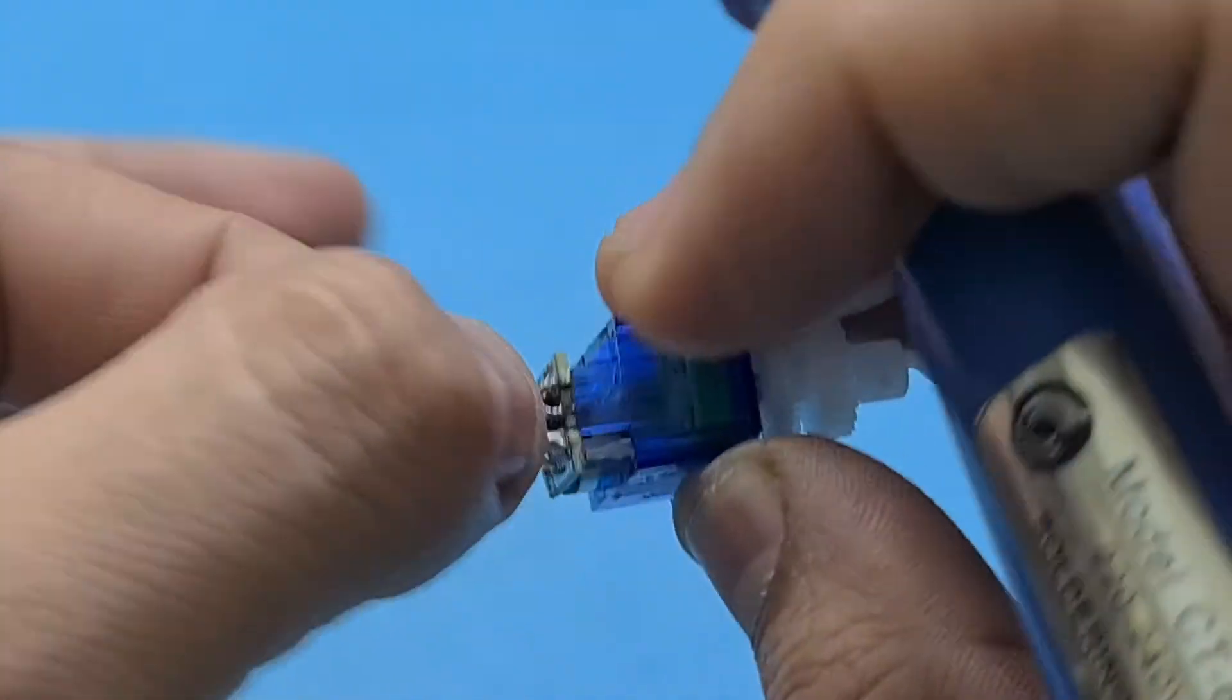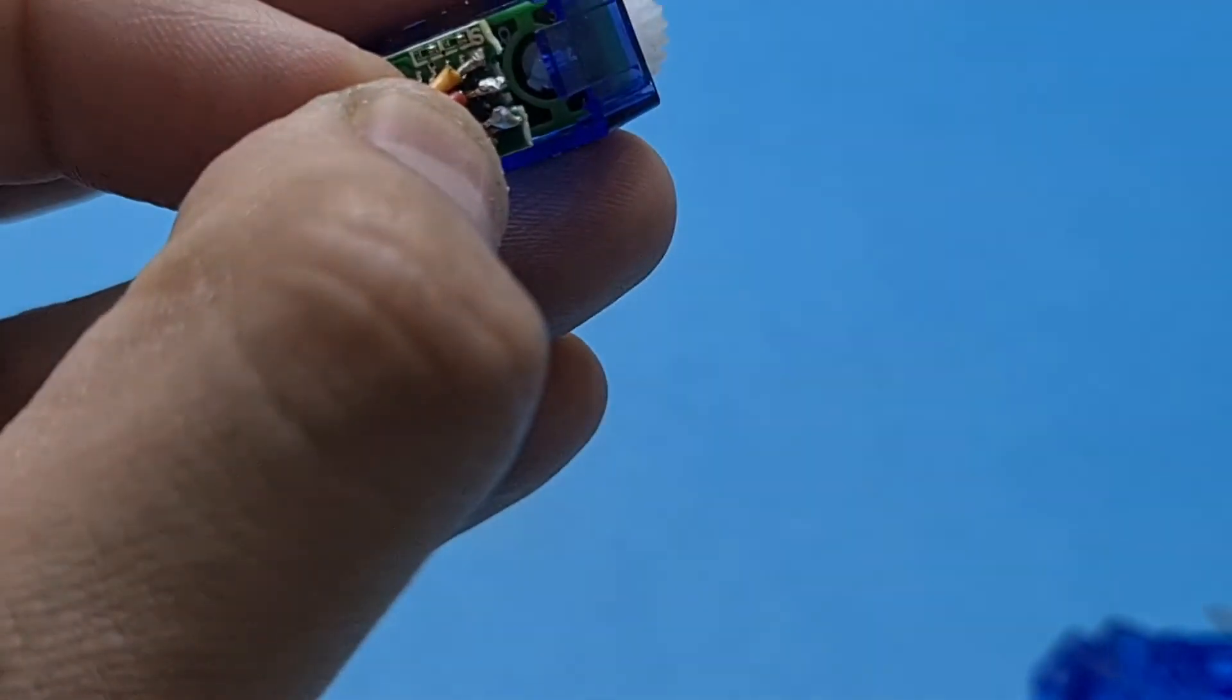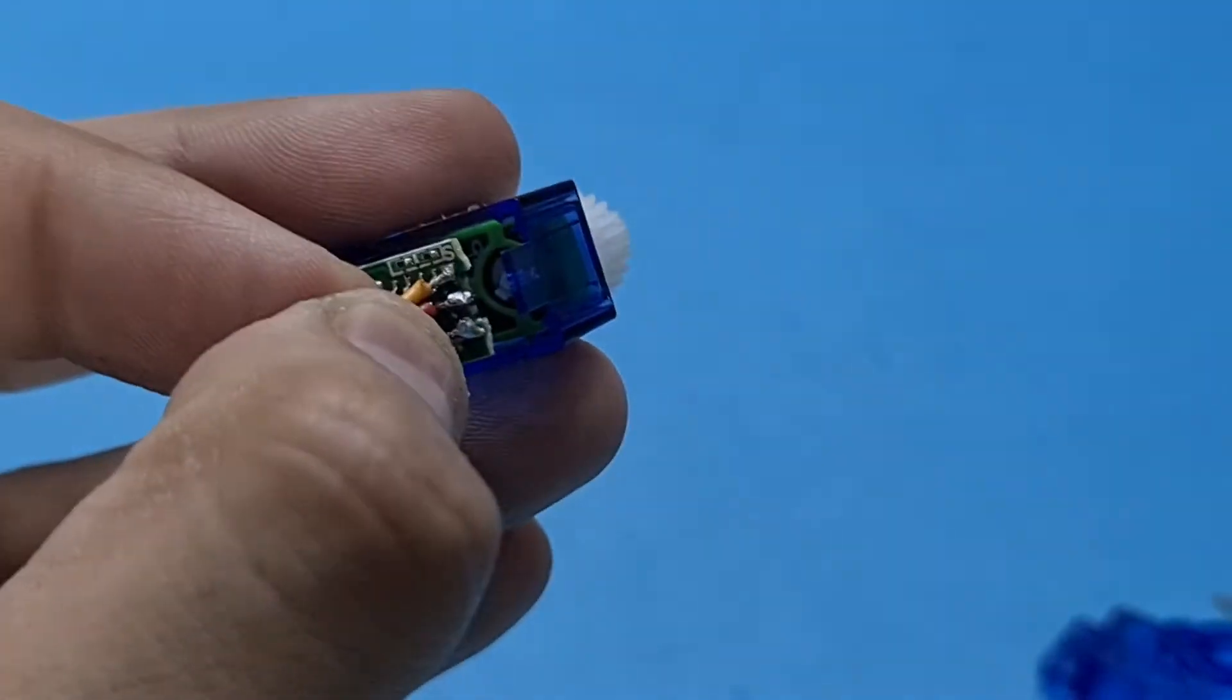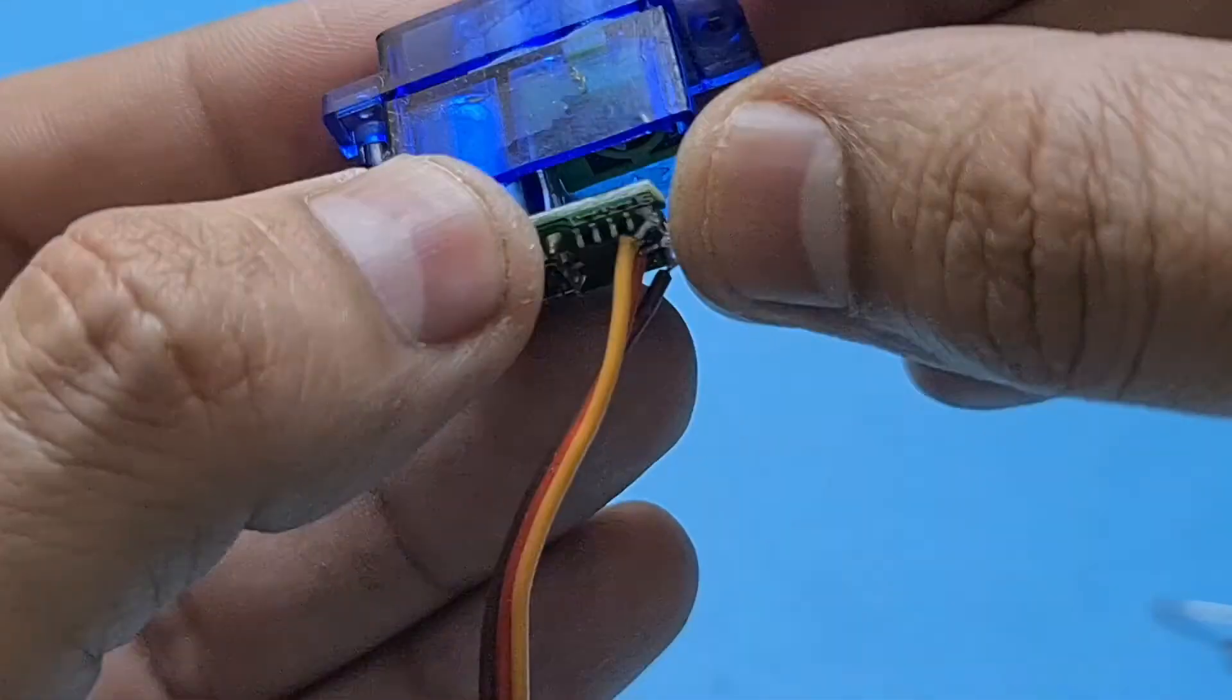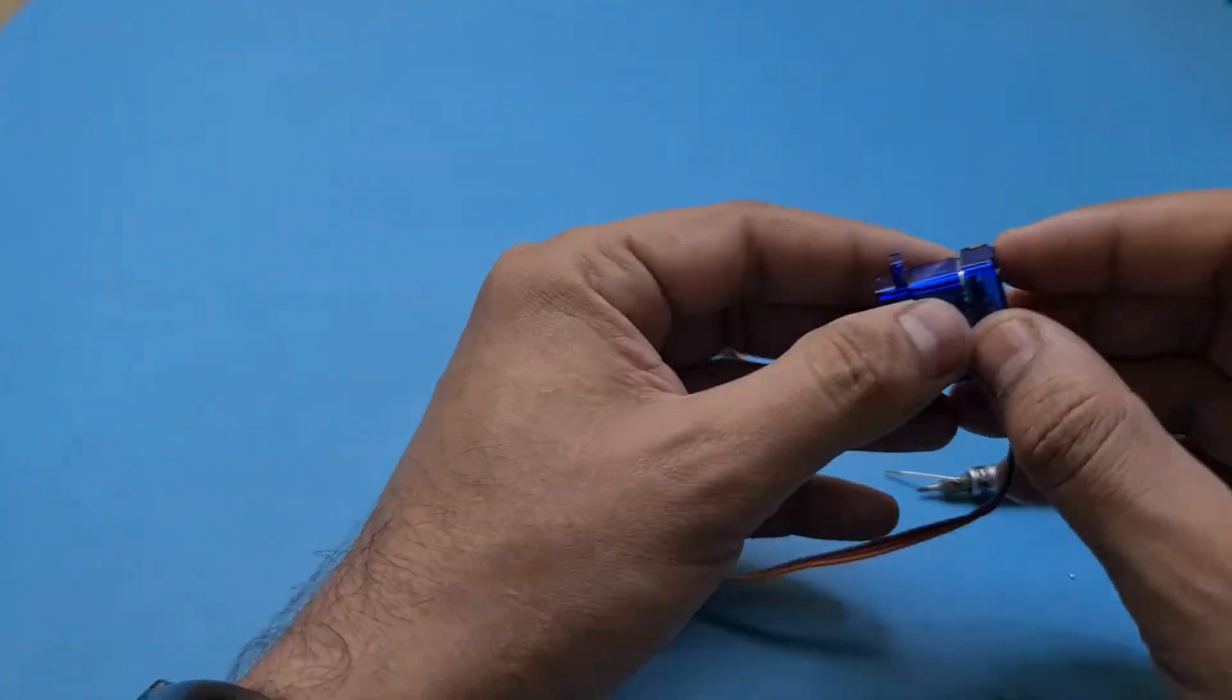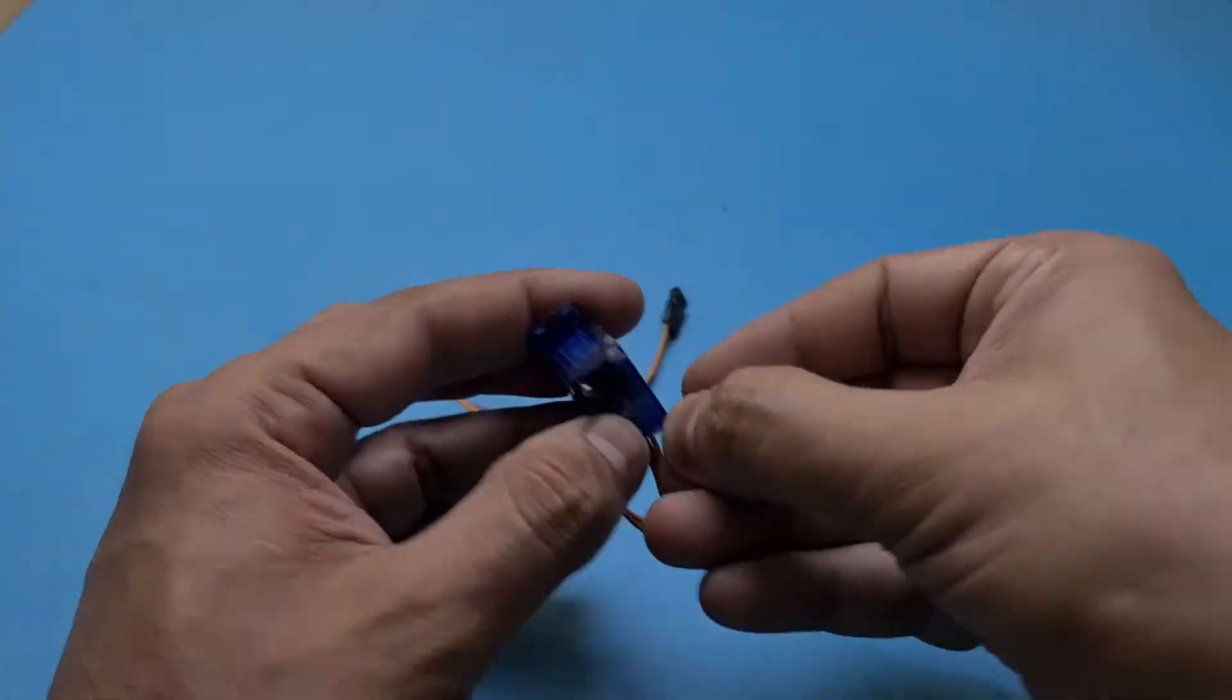Make sure to remove any excessive solder as it can result in a short circuit. I think the wire joints are strong enough, so it's now time to test this servo motor.